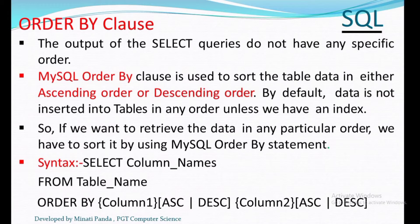Here we have to remember that the data in the table is not sorted — only the results that appear on the screen are sorted. We can sort the table with one column or more than one column. The syntax is: SELECT column names FROM table name ORDER BY column name one either ASC or DESC, comma column name two, and so on. If we sort string data, it will be in alphabetical order. There are only two types of sorting: ascending order and descending order.